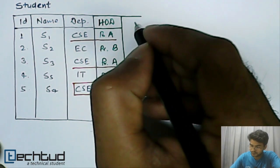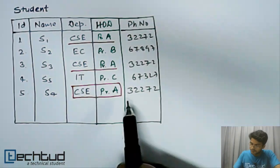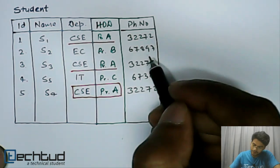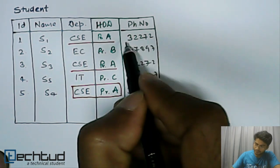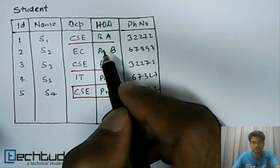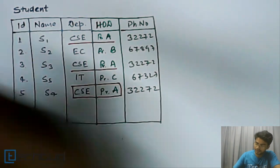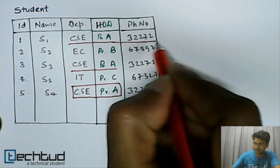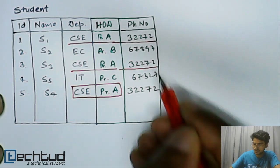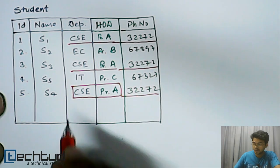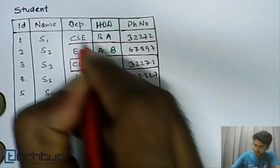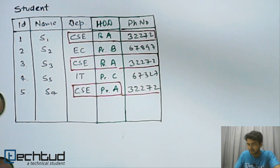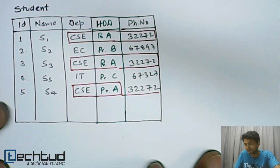Now let's make it worse. We add another column for the department phone number. The situation worsens because every time a new CSE student is added, we have to store the phone number again — Professor A and the full phone number — repeating the same data over and over. This increases the size of our database, and this is the redundancy we need to remove.